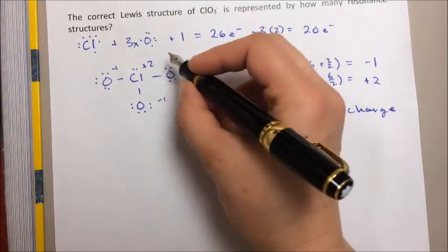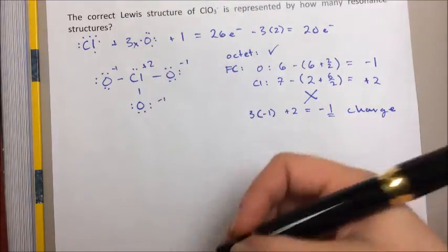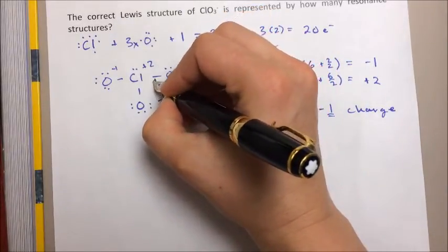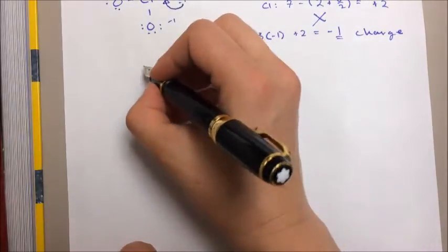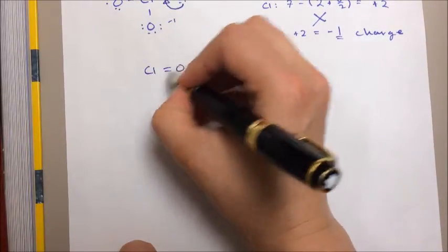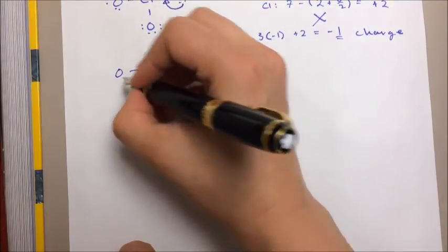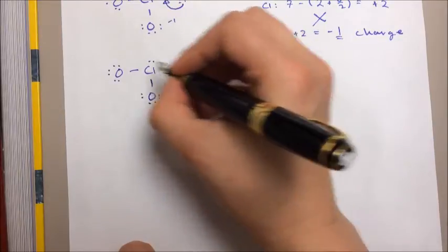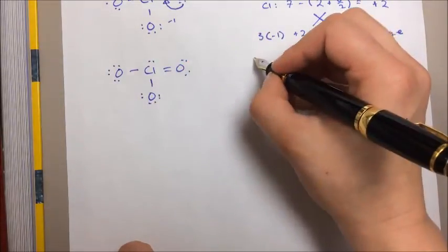And we can reduce overall formal charges in a lot of situations by forming double bonds or triple bonds. So let's see what happens if we just take a lone pair on one of these oxygens and push it down to form a double bond. So we're going to redraw this structure, add in our lone pairs. So now we've got one chlorine-oxygen double bond and two chlorine-oxygen single bonds.